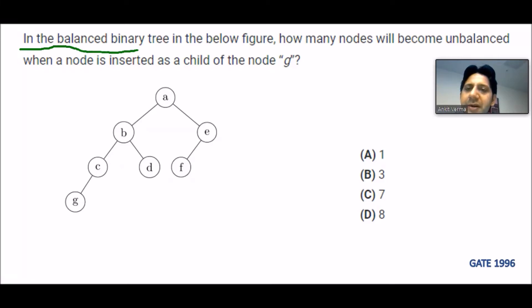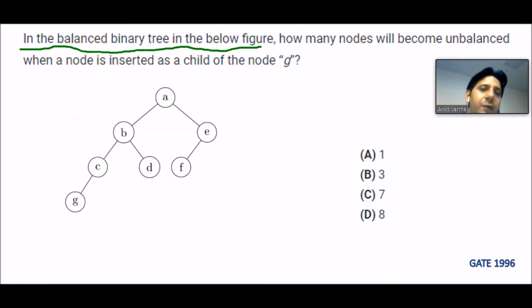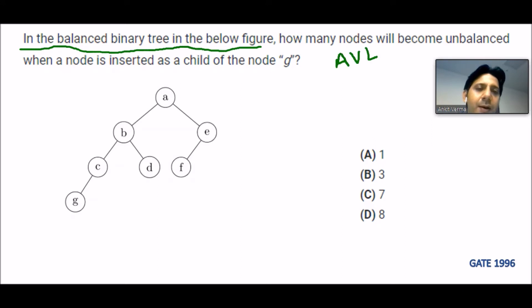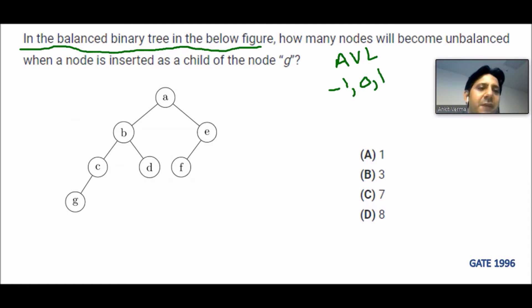In the balanced binary tree shown in the figure — whenever someone asks about balanced and unbalanced trees, they are talking about the AVL tree. In an AVL tree, the balancing factor should be -1, 0, or 1 only. If the balancing factor satisfies this condition, the tree is considered balanced.